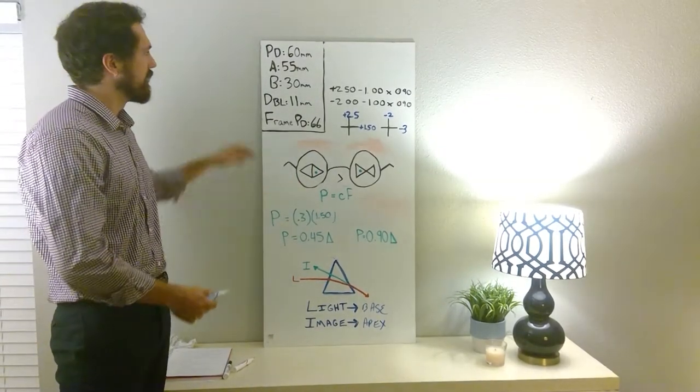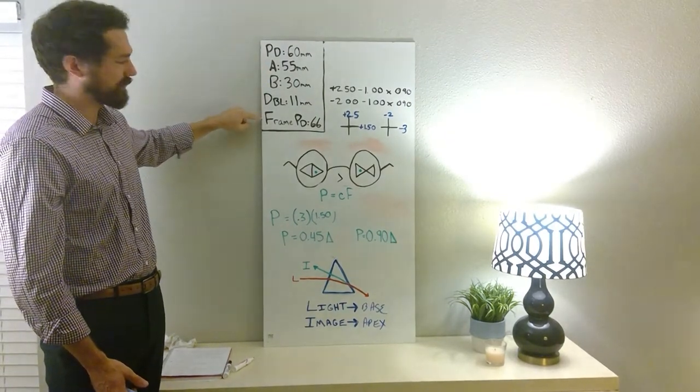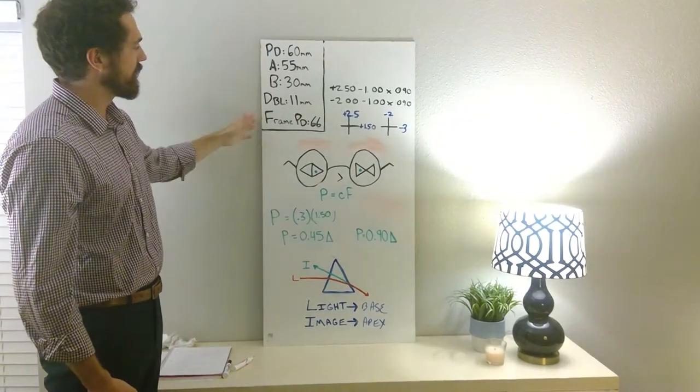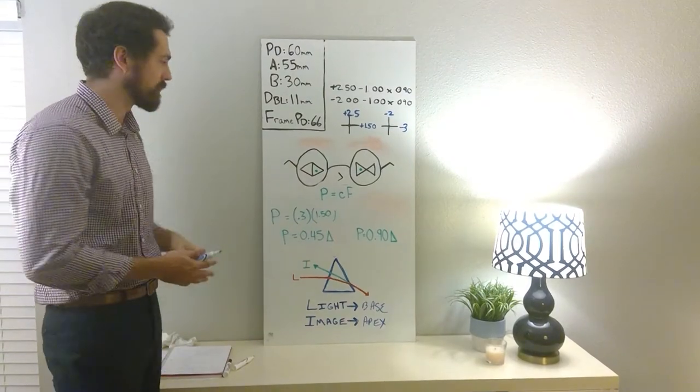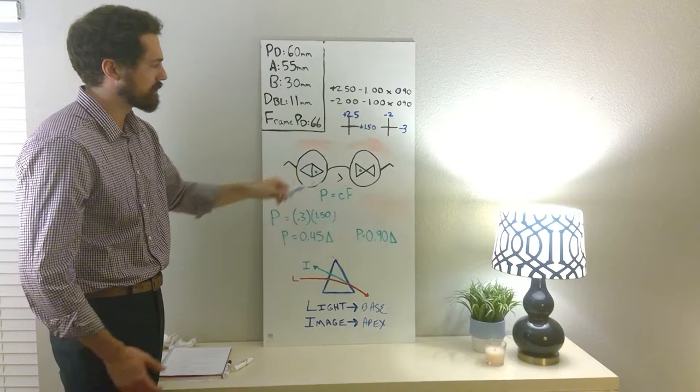So let's look at our problem with that. We have our frame parameters up here, so we did A plus DBL to get the frame PD of 66. We're going to do the patient PD of 60. So we can see here that the lens, both lenses are going to be decentered out by 3mm because the patient PD is more narrow. So we have our nice drawing here with our pupils drawn in, in the prism direction.